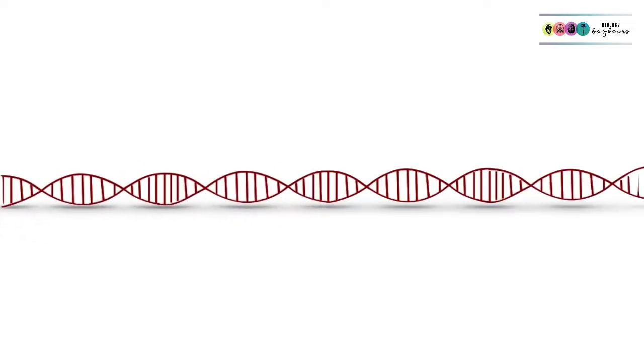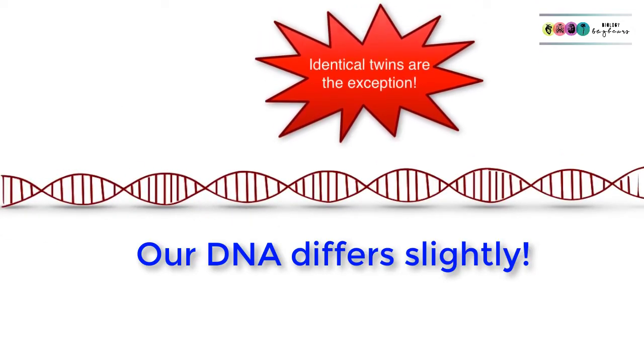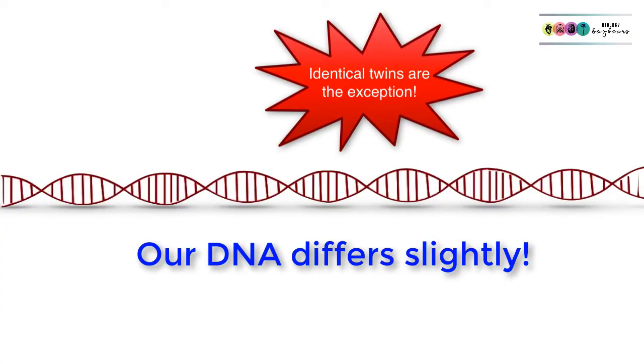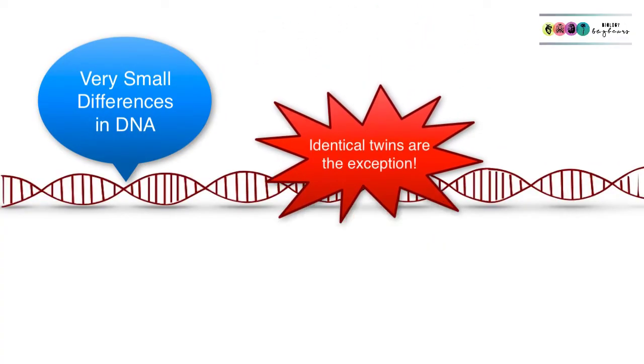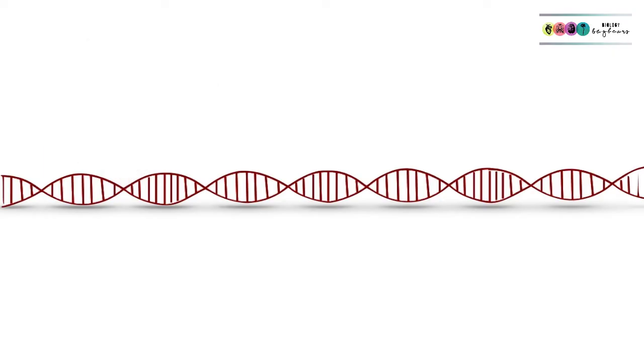DNA profiling is only possible because our DNA is very slightly different from person to person. The only people who wouldn't have those differences would be identical twins, so there is this tiny difference and it's that difference that is used in genetic profiling.